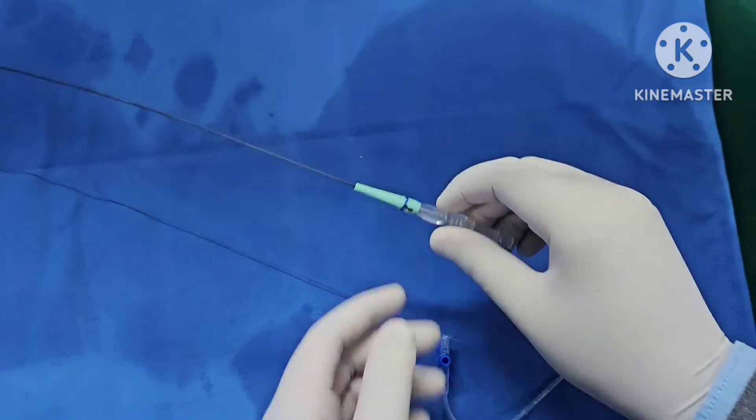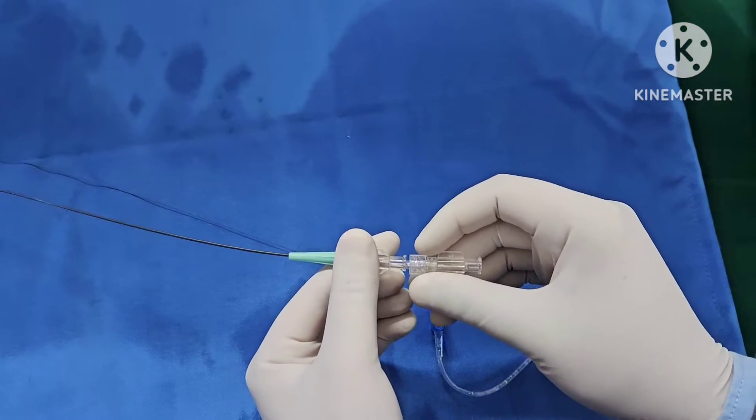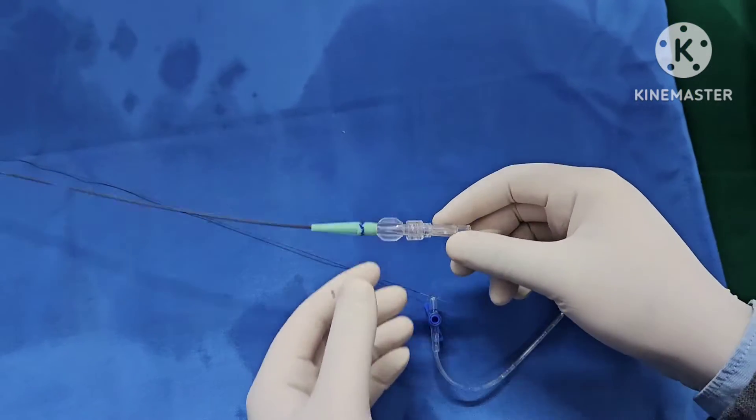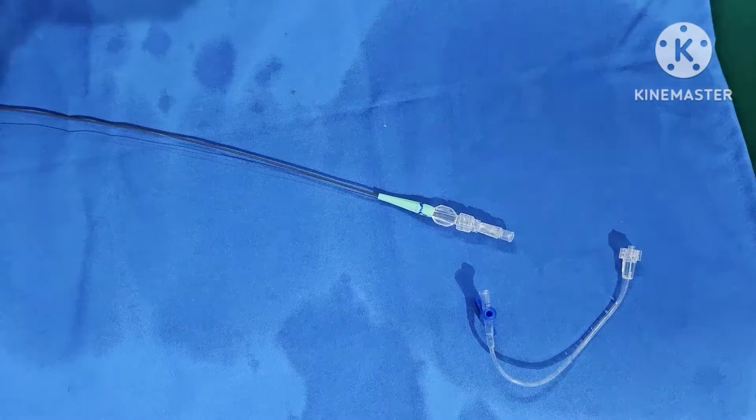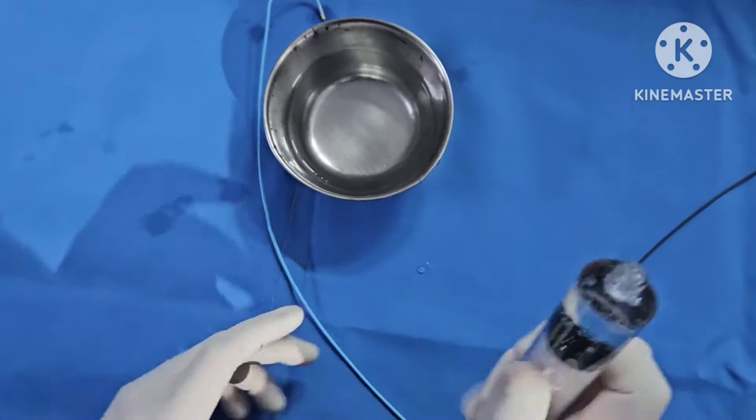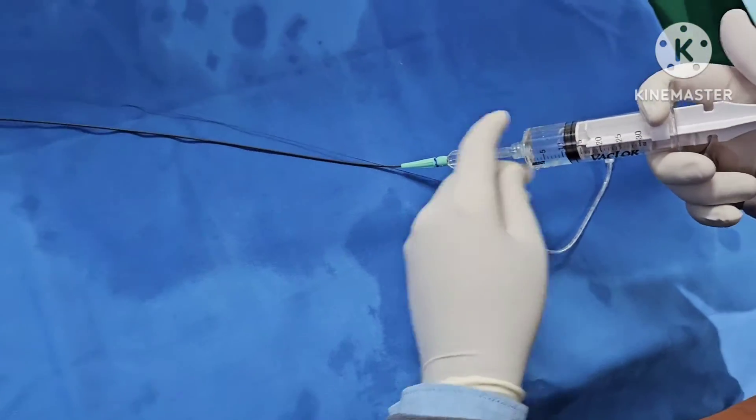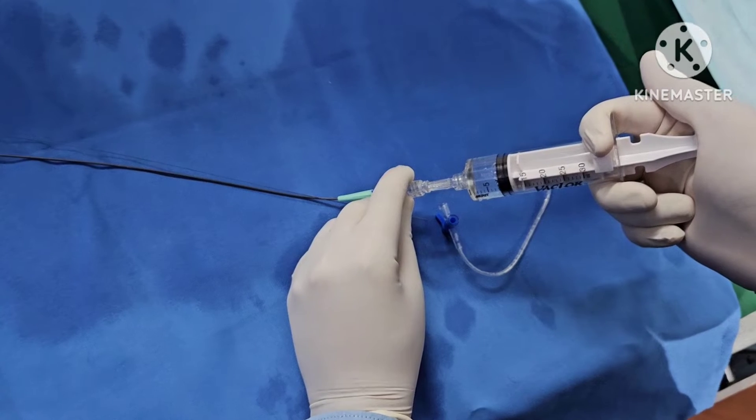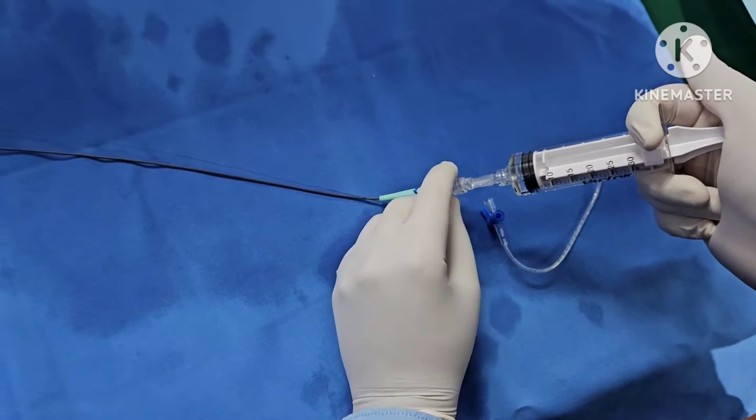So the thrombus aspiration catheter, the stilet is already in place. You can see that the stilet is inside. So we insert the thrombus aspiration catheter with the stilet in place. So first of all, what we have to do is we are going to take 5 to 10 ml of heparinized saline and we are going to flush the catheter once. And we will be inserting all of this heparinized saline so that the catheter gets flushed adequately.